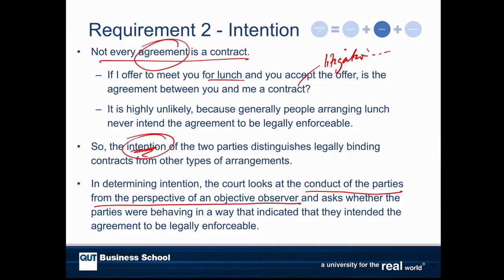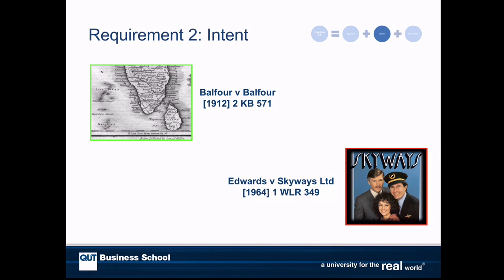So what would an objective observer think? Were the parties behaving in a way that looked like they intended to create legally enforceable relations between each other or not? To get to that point, the courts have traditionally used a presumption and rebuttal approach. To help us think about this, we've got a couple of cases to look at.